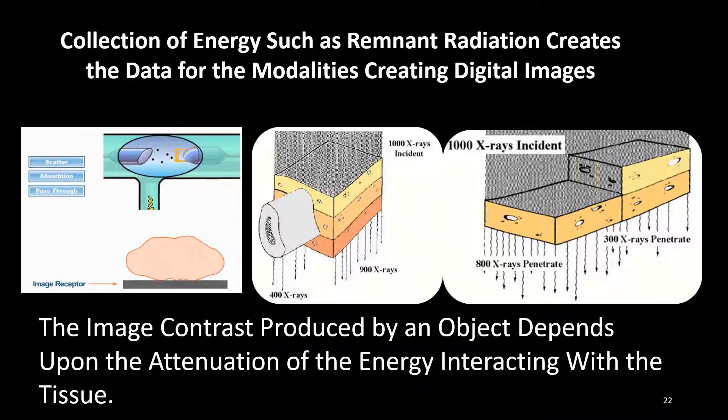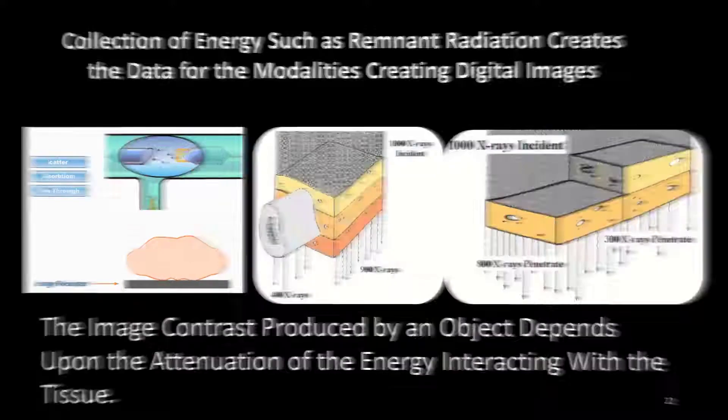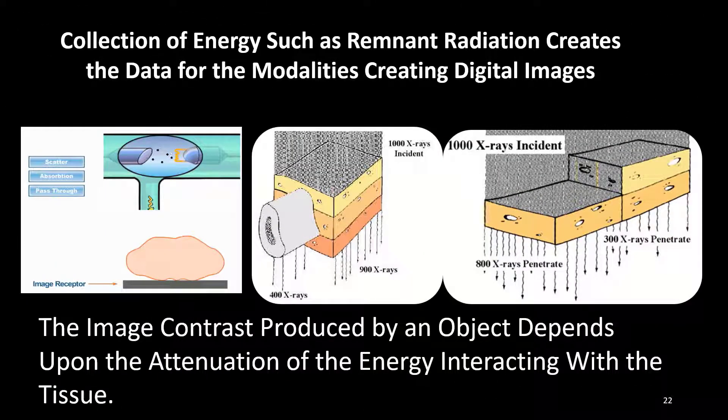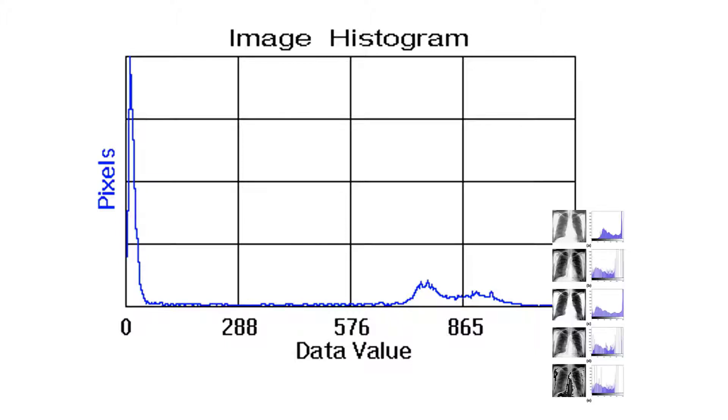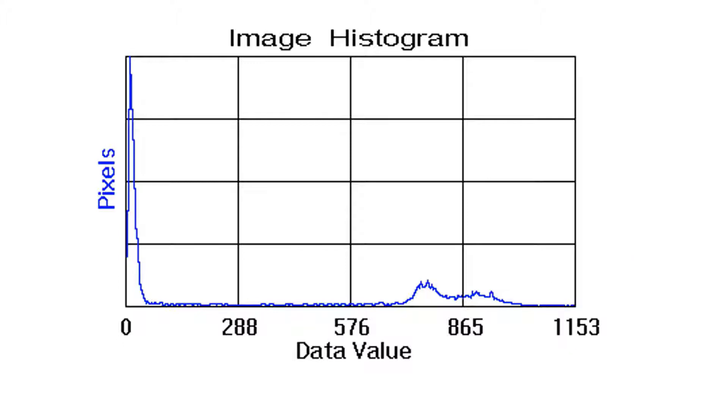When energy interacts with tissue, we are seeing the type of tissues that are being interacted with, both in their composition and thickness. The image contrast produced by an object depends upon the attenuation of the energy interacting with the tissue. The intensity of these interactions are saved as pixels, and we know their size and their location. Therefore, we can use these pixels to create images.